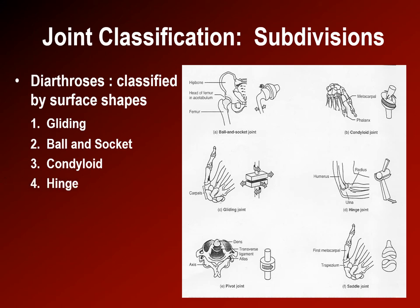Hinge joints are meant to move in one rotational direction. An example is the ulnar humeral joint of the elbow — a very stable joint due to its grooves and strong ligaments, but it only moves in that one direction. A pivot joint is what it sounds like: it pivots throughout an axis. An example would be the radial head pivoting within the annular ligament.